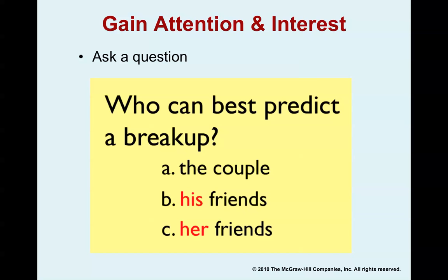Here's a question one speaker used as an opener: 'If you want to know whether a couple in a romantic relationship will stay together or break up, the most accurate predictions come from — the couple, his friends, or her friends?' If you answered C, you're correct — it's her friends. Researchers at Purdue University found that her friends are much better at predicting the outcome of a relationship than the couple themselves. This kind of question grabs interest and gains the audience's attention.